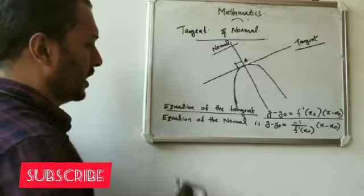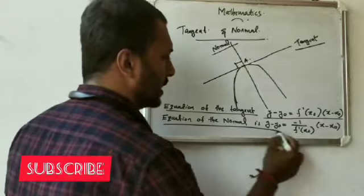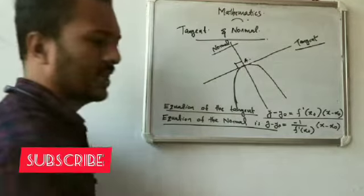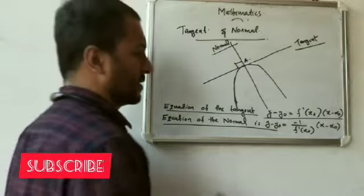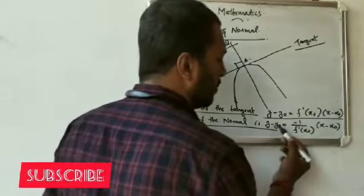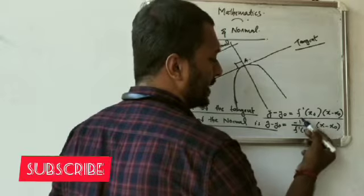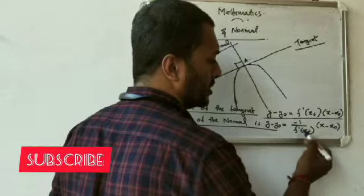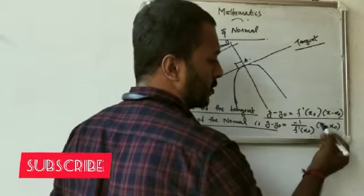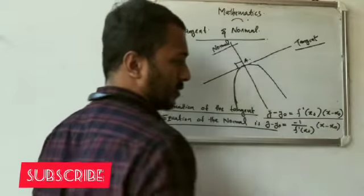The equation of the normal is: y minus y0 is equal to minus 1 by f dash of x0, into x minus x0.